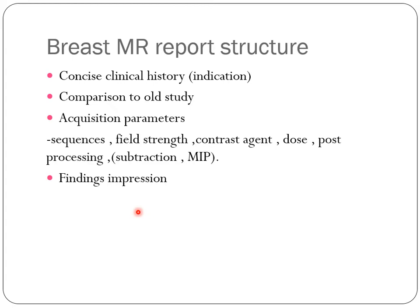Regarding the structured report format for breast MRI, the report should include: clinical indication and comparison to prior studies, acquisition parameters including sequences, field strength, contrast agent, post-processing subtractions, and maximum intensity projection, followed by findings and impression.